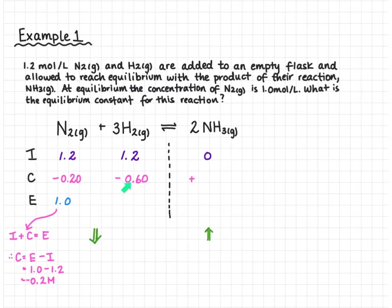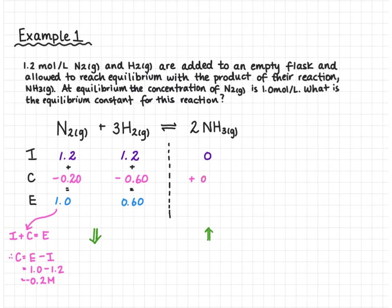Where we have 0.2 for nitrogen, we have 0.6 for hydrogen — we just scale by the relative coefficients. Adding initial plus change gives an equilibrium concentration of hydrogen of 0.6 moles per liter. For ammonia, nitrogen has a coefficient of 1 and ammonia has 2, so the magnitude of change is twice as big: 0.2 × 2 = 0.4. That gives us an equilibrium concentration for ammonia of 0.4 moles per liter.